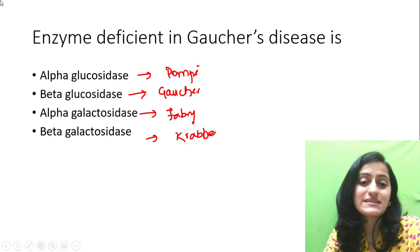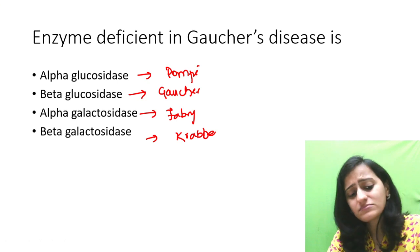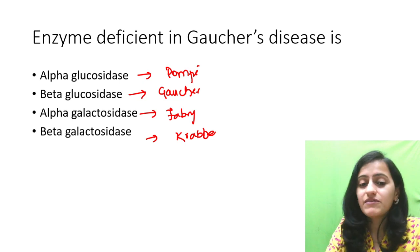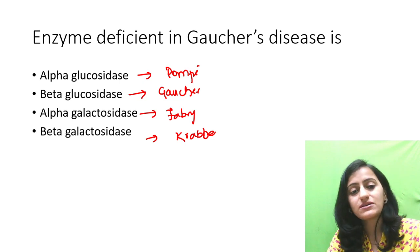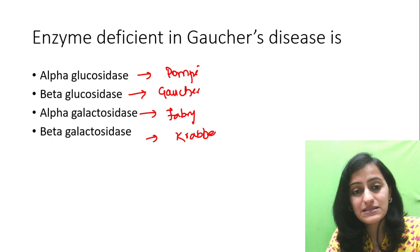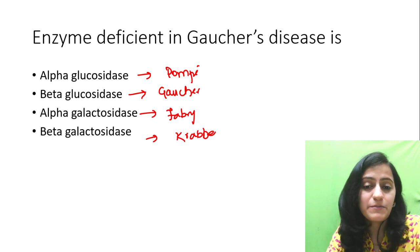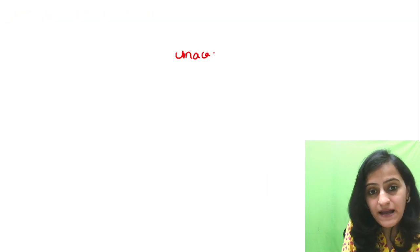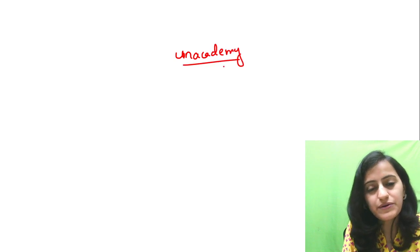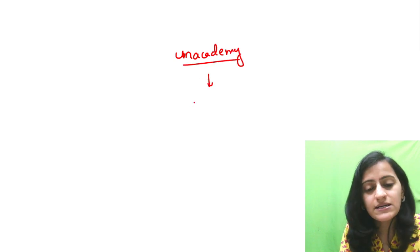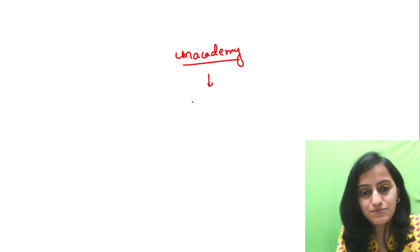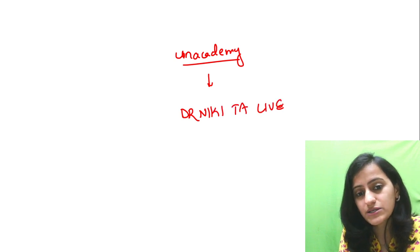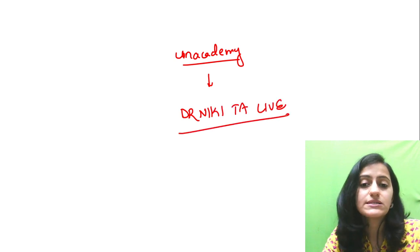This is just a sneak peek into the entire biochemistry revision we are doing for the upcoming FMG exam. We had part one today in the morning. We will have the rest of it where we are going to discuss a lot of important short topics in biochemistry for the upcoming FMG and NEET-PG exam. The session is on the Unacademy app and it's a free live class, so all of you can join without any extra cost. The link is in the description. If asked for a code to join the class, you can use the code DrNikitaLive.